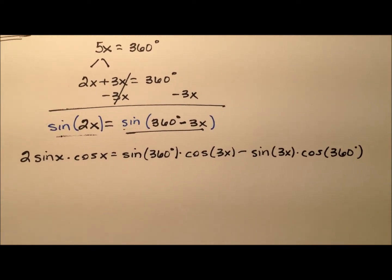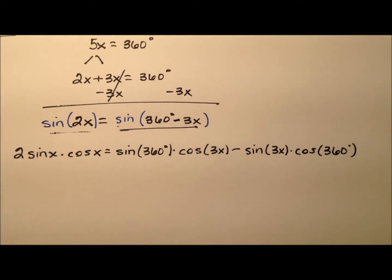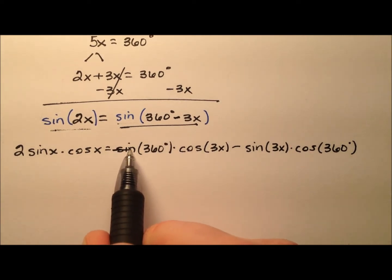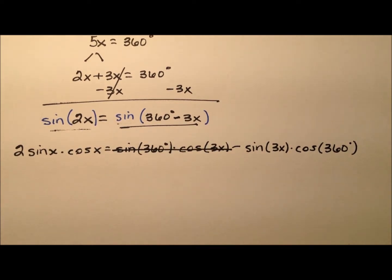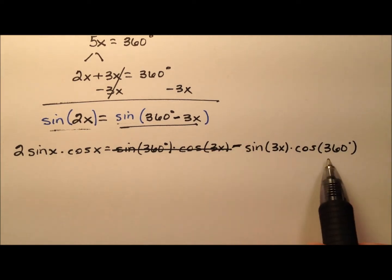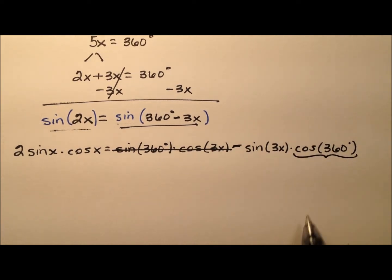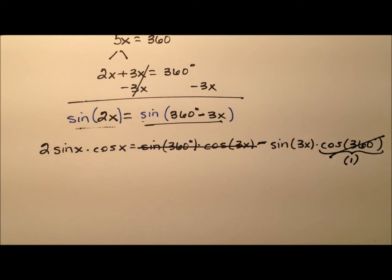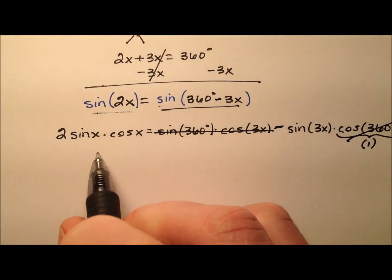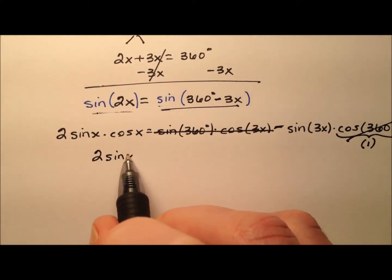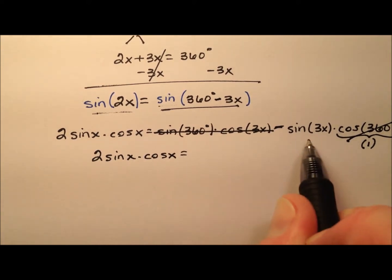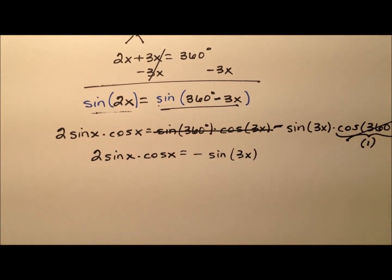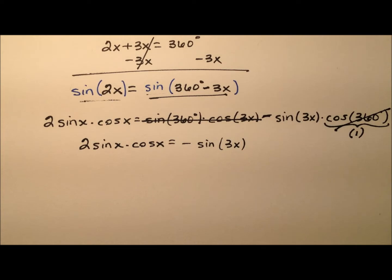There are some nice things about this. The sine of 360 degrees is actually 0, so that will zero out that entire part of the expression. Similarly, the cosine of 360 degrees is 1, so I can ignore that multiplication by 1. Tidying this up, I have 2 times sine of x times cosine of x equals the negative of sine of 3x.